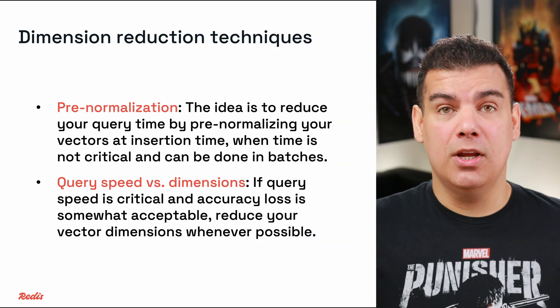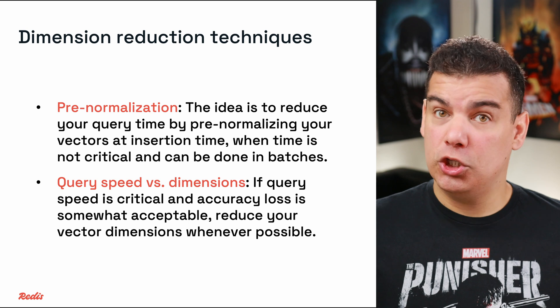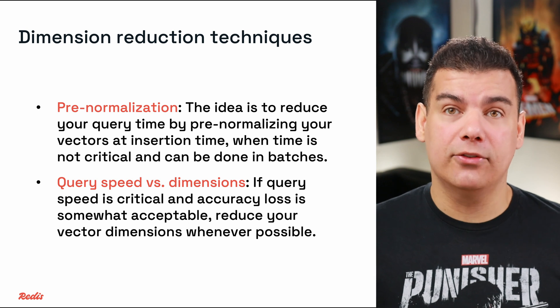Dimensionality has a linear impact on computational time. Each additional dimension increases both memory usage and computational time proportionally. Dimension reduction techniques like PCA or random projection can provide significant performance improvements when query speed is critical, though they must be balanced against potential accuracy loss. Two practical optimizations: first, pre-normalize your vectors at insertion time when using cosine similarity. Second, consider dimension reduction techniques if query speed is critical and some accuracy loss is acceptable.